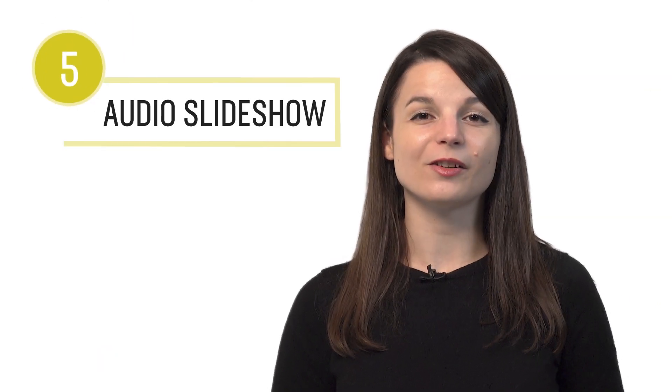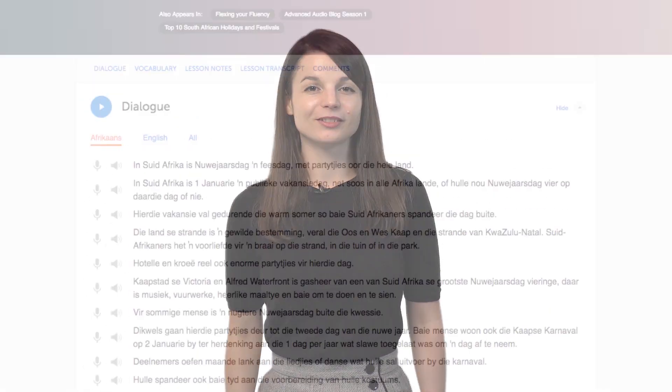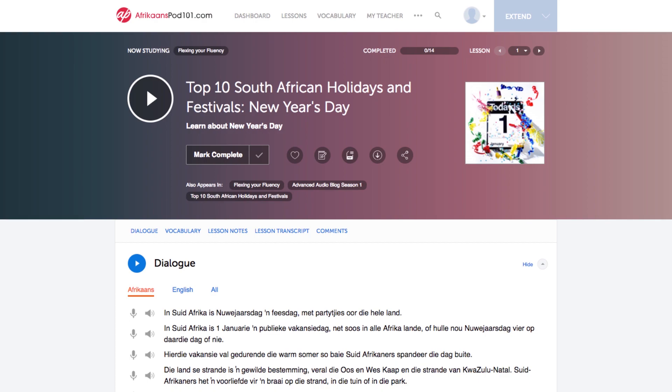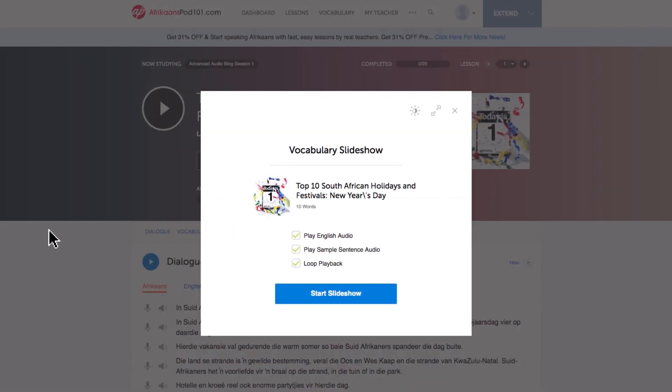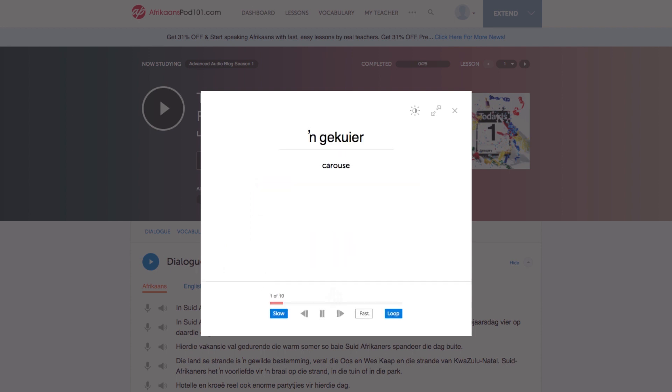Number five, play the audio slideshow. Want to play words on a loop until they're stuck in your head? You can do this with the audio slideshow. This feature is available on every free vocab list and on all of the lessons. With the lessons, just scroll down to the vocab section and click on slideshow.